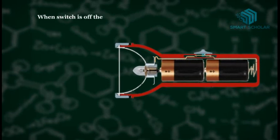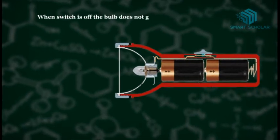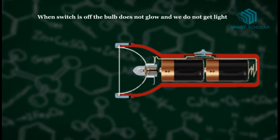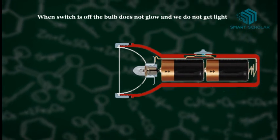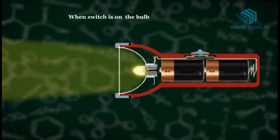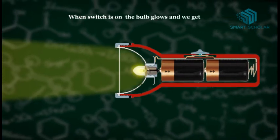When switch is off, the bulb does not glow and we do not get light. When switch is on, the bulb glows and we get light.